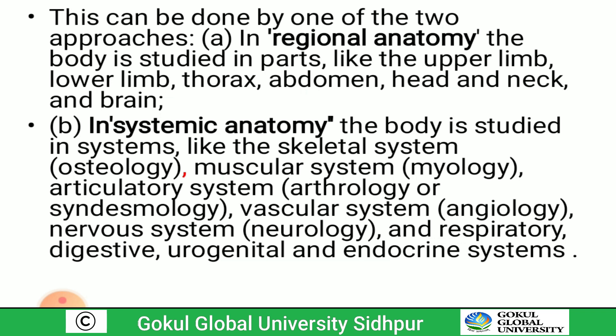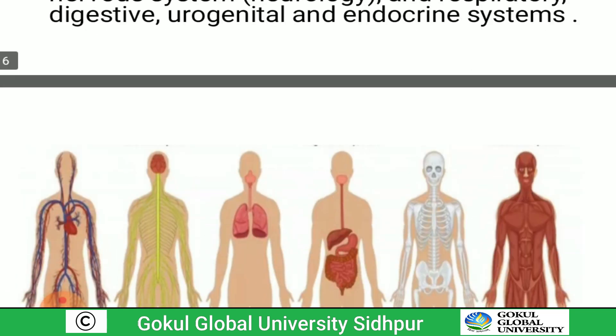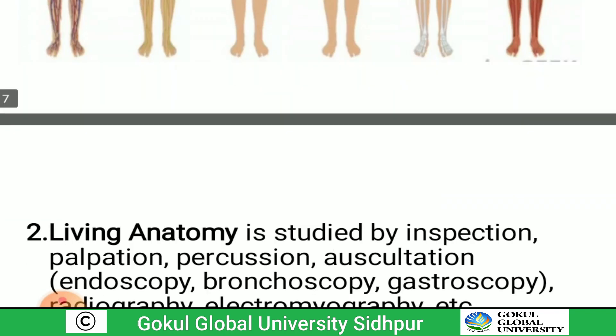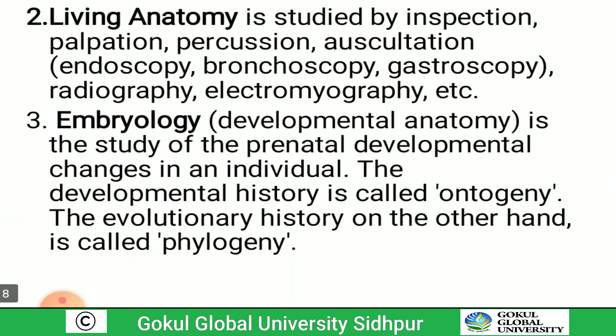In regional anatomy, the body is studied in parts such as upper limb, lower limb, thorax, abdomen, head, neck, and brain. In systemic anatomy, it is studied system-wise: skeletal system, muscular system, vascular system, nervous system, respiratory system, digestive system, and myology.